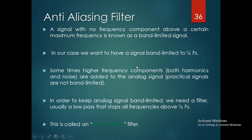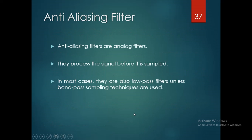In order to keep the analog signal band-limited, we need a filter — usually a low-pass filter — that stops all frequencies above the sampling frequency, that is above 1/(2·fs). That filter is called an anti-aliasing filter. Anti-aliasing filters are analog filters. They process the signal before it is sampled. In most cases they are low-pass filters, unless band-pass sampling techniques are used.